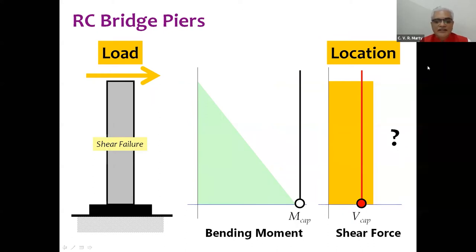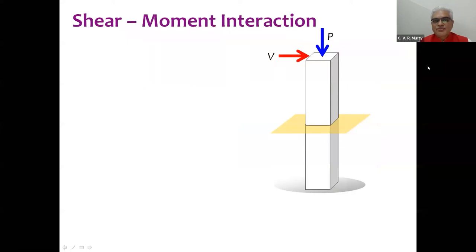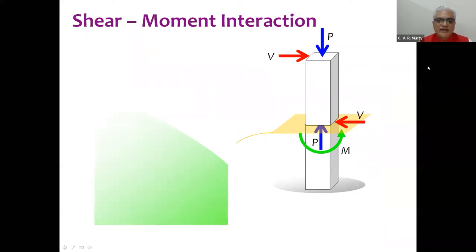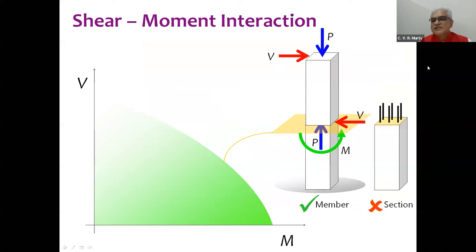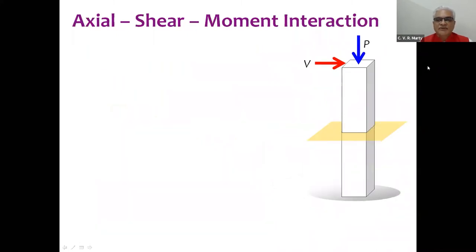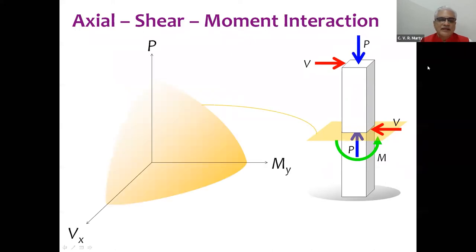This brings us to the point that in bridge piers, shear and moment are not independent — they have an interaction and a relationship. Furthermore, this shear-moment interaction is a member calculation, not a section calculation. When it comes to bridge piers, the crack is not horizontal but inclined, so you need to look at member behavior. There is also an axial load on the pier, so we must consider axial force, bending moment, and shear force interaction.